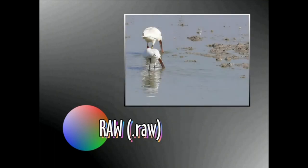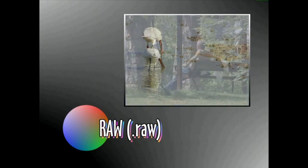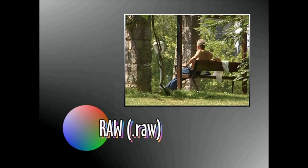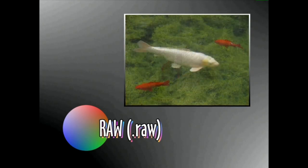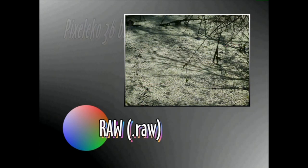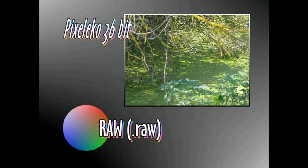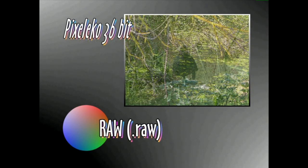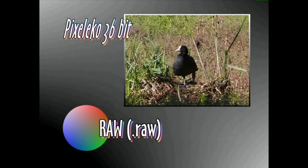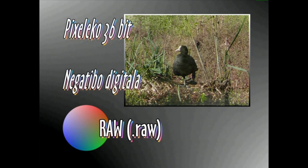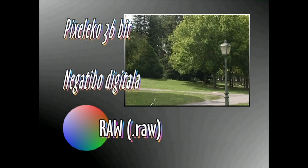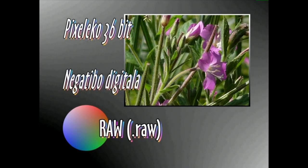Kompresiorik erabiltzen ez duen arxibo formatua da RAW. RAW arxiboetan, argazki kameraren sentsoreak jasotako irudiaren datu guztiak gordetzen dira. Alako arxiboetan gordetako informazioak pixeleko hogeita hamasei bit izan ohi ditu. Hori dela eta, memoria txartelean toki haundia behar izaten dute, baina gero irudi lantzerakoan eta doitzerakoan aukera gehiago izango dugu. Era horretako arxiboei negatibo digital ere deitzen zaie. Alako formatuetan biltegiratutako arxiboak .RAW luzapen arekin adierazten dira.